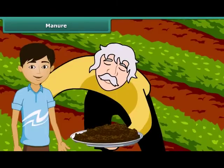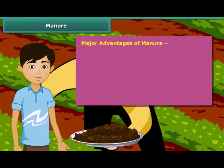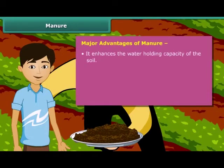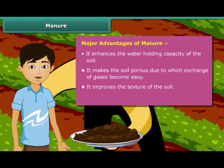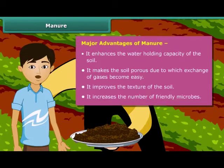Now, let us look at some of the major advantages of organic manure. Manure enhances the water holding capacity of the soil. It makes the soil porous, due to which exchange of gases becomes easy. It improves the texture of the soil and also increases the number of friendly microbes necessary for a healthy crop.